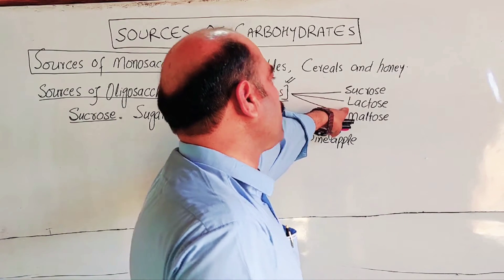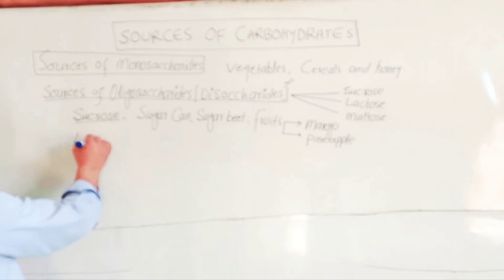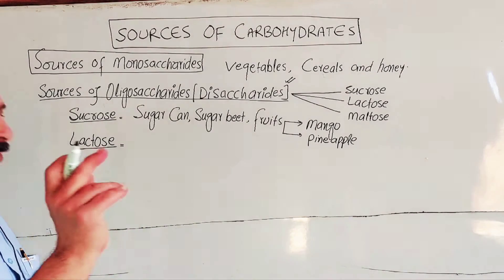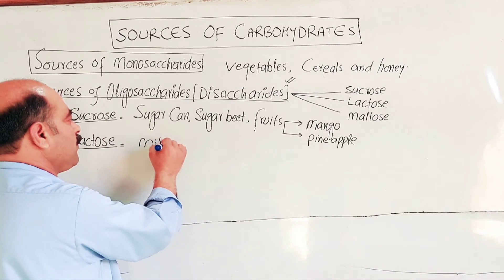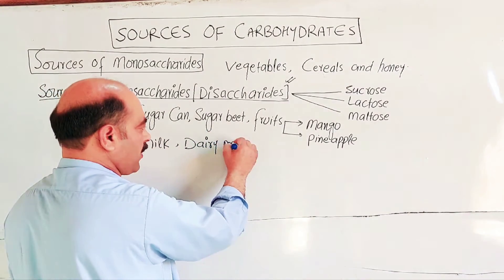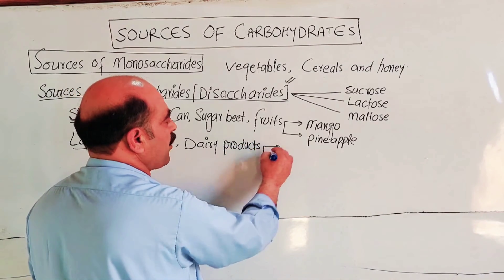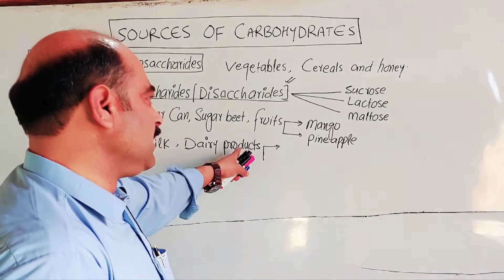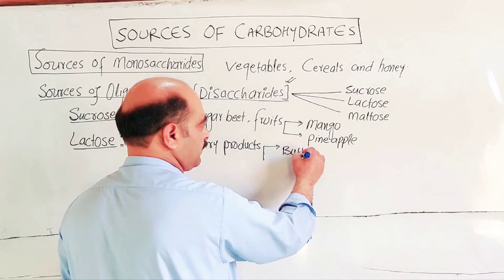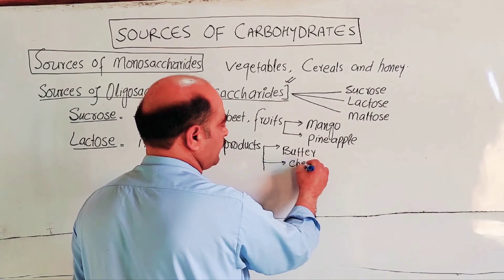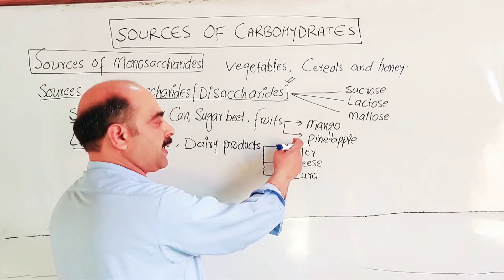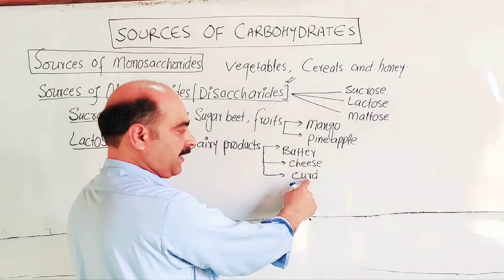The next disaccharide is lactose, also called milk sugar. The main source of lactose is milk. Dairy products are key sources, including butter, cheese, paneer, and curds. These dairy-based foods are the primary sources of lactose.